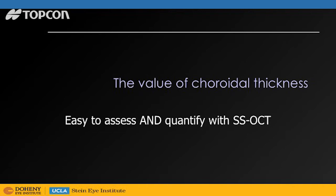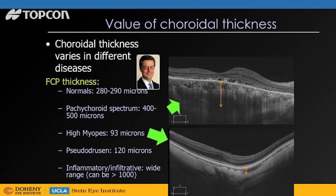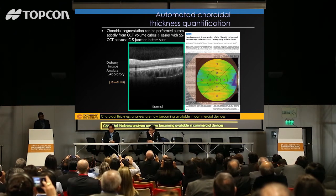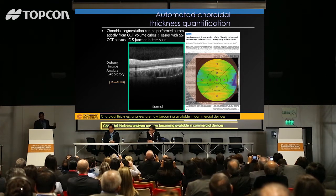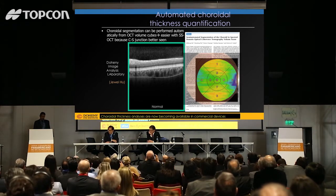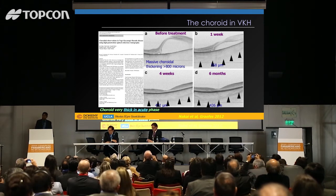Choroidal thickness is something that swept source OCT allows us to measure quite easily, and it's a real credit to Professor Spade, who first highlighted the potential importance of the choroid and choroidal thickness. The choroid can be quite thick in pachychoroid disorders, but quite thin in patients with pseudodrusen and myopia. But there's an additional advantage with swept source OCT — not only can we see the choroid better, it's easier to do automated quantification. This is helpful not just for AMD and pachychoroid spectrum disorders, but also for inflammatory diseases in particular.